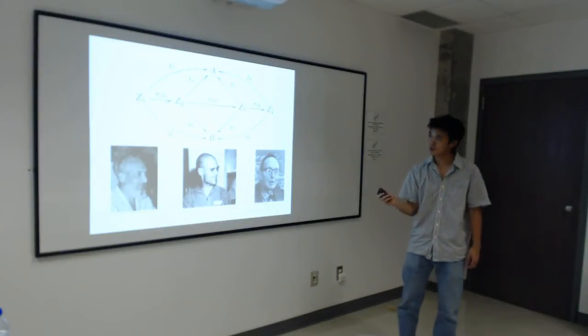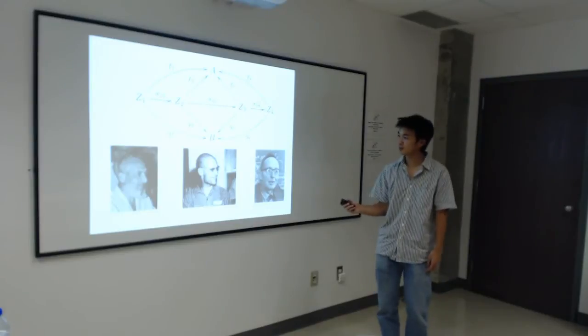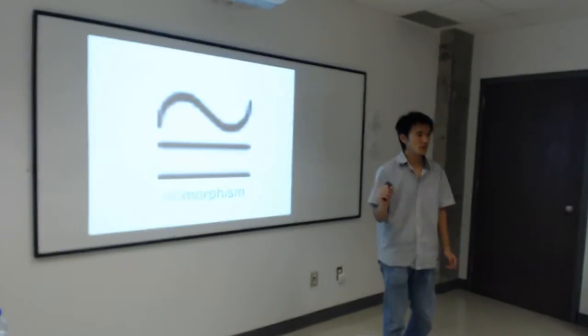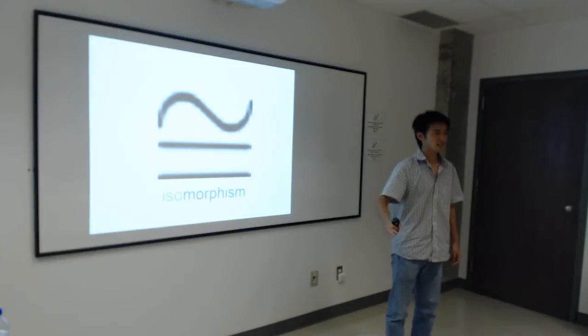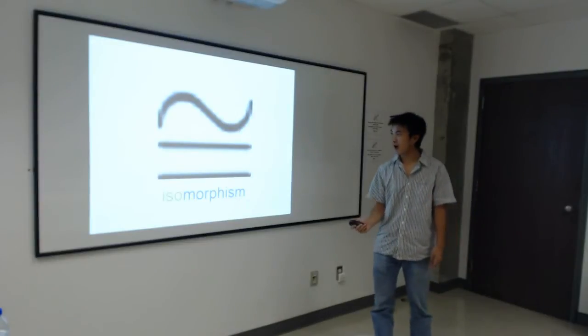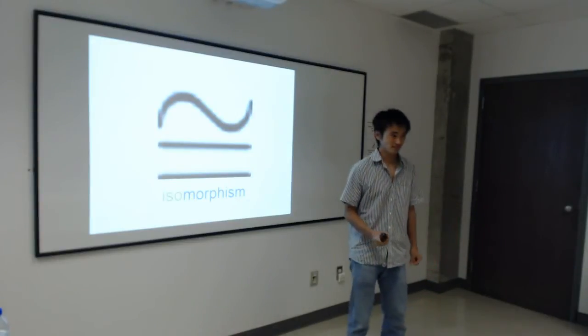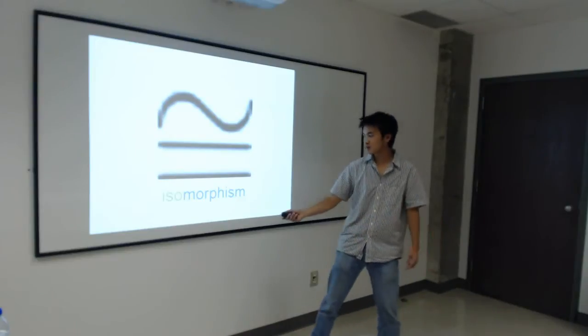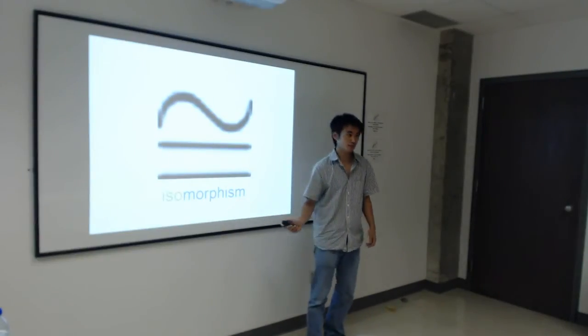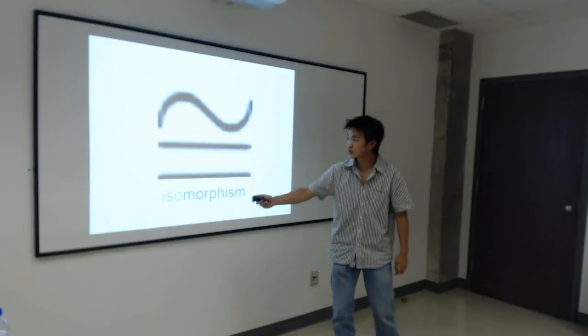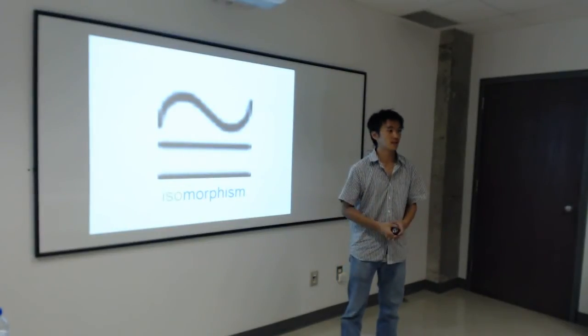In particular, a category is very powerful because it defines what's probably the most important word in the whole of mathematics: the concept of isomorphism. Now, isomorphism comes from the Greek. It means the same structure. So an isomorphism is a way of saying that two structures are actually one and the same.